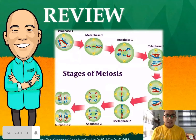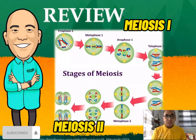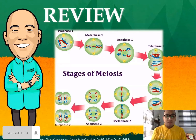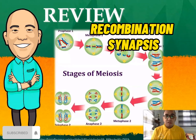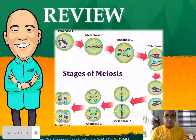Let us not forget the stages of meiosis — meiosis one and meiosis two. Please be reminded that one of the distinguishing differences between mitosis and meiosis is that in meiosis, we have what we call recombination, the synapsis or the crossing over, which mitosis doesn't have.